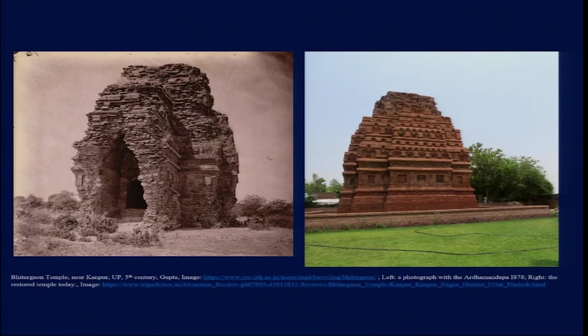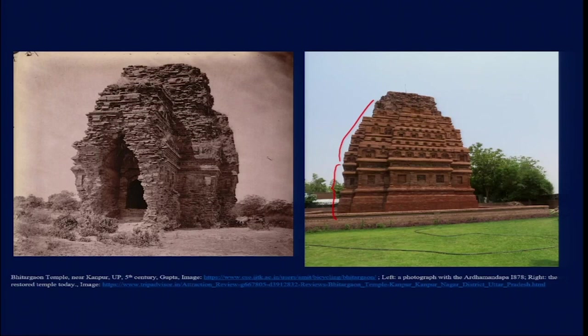The Garbhagriha of the Bhitargav temple follows the Vastu Purusha Mandala ground plan — a square ground plan — and on the top of that we have the superstructure. Over time, the superstructure grew much taller relative to the base as the terminologies, ideas, and material elements used in temple architecture became more and more complex.